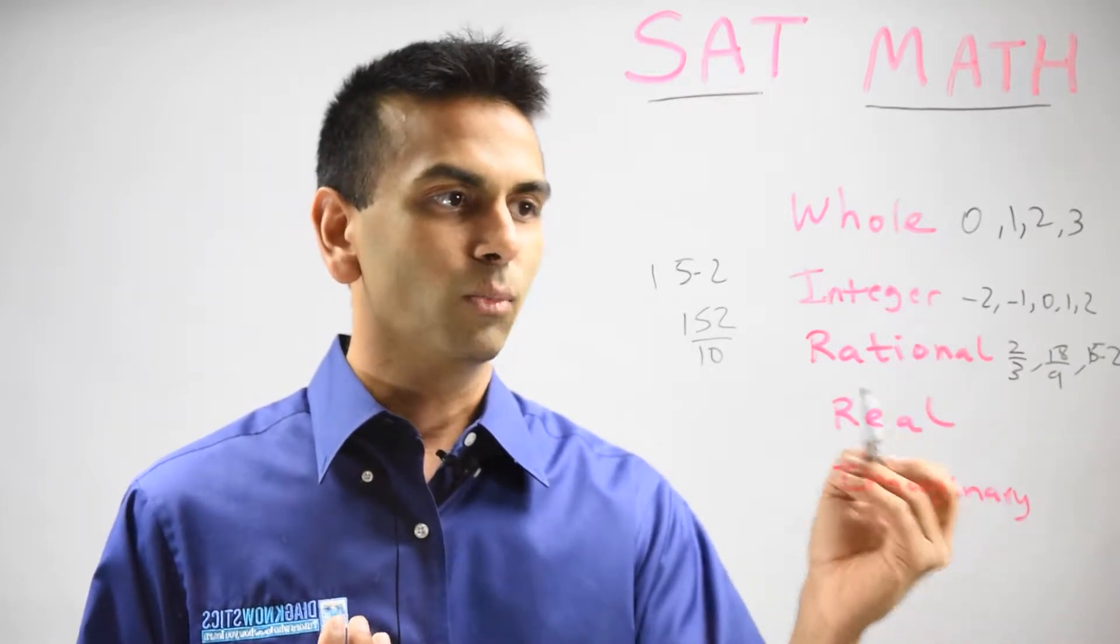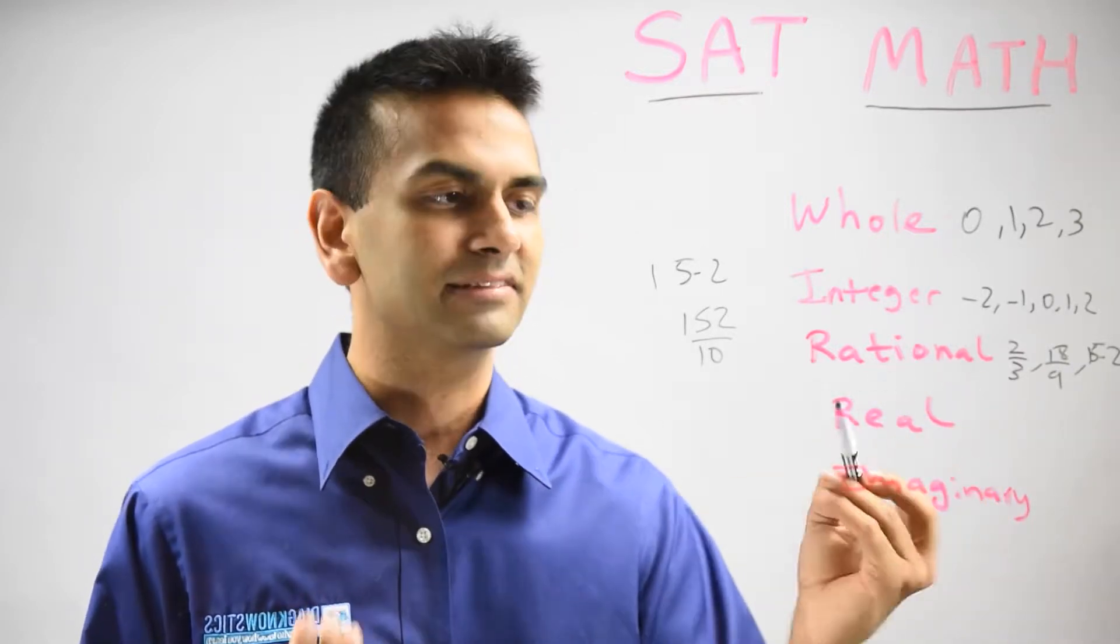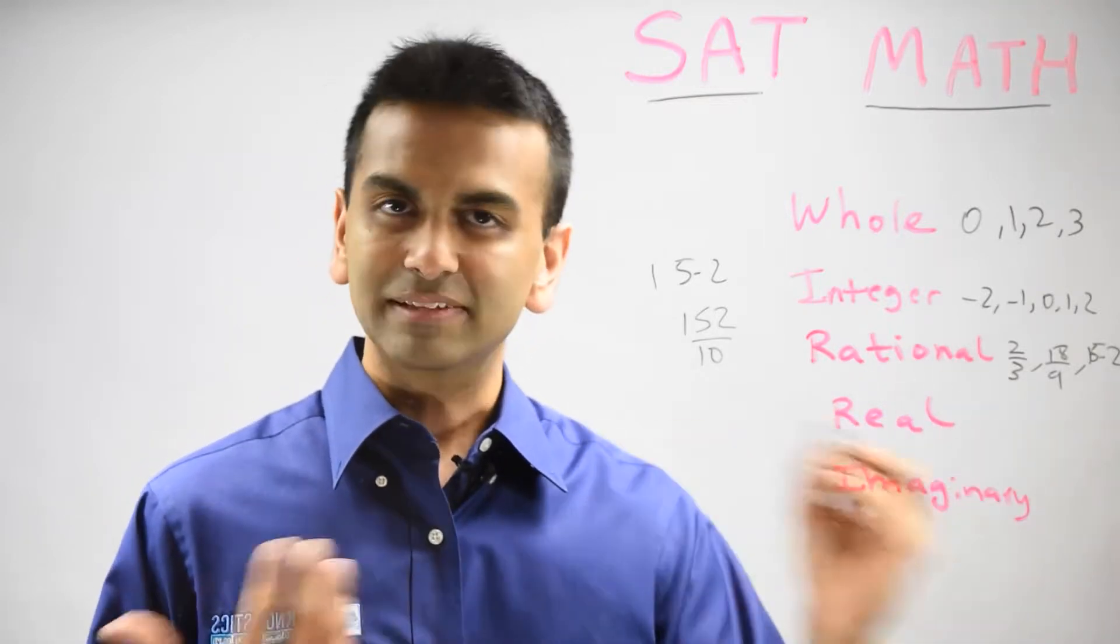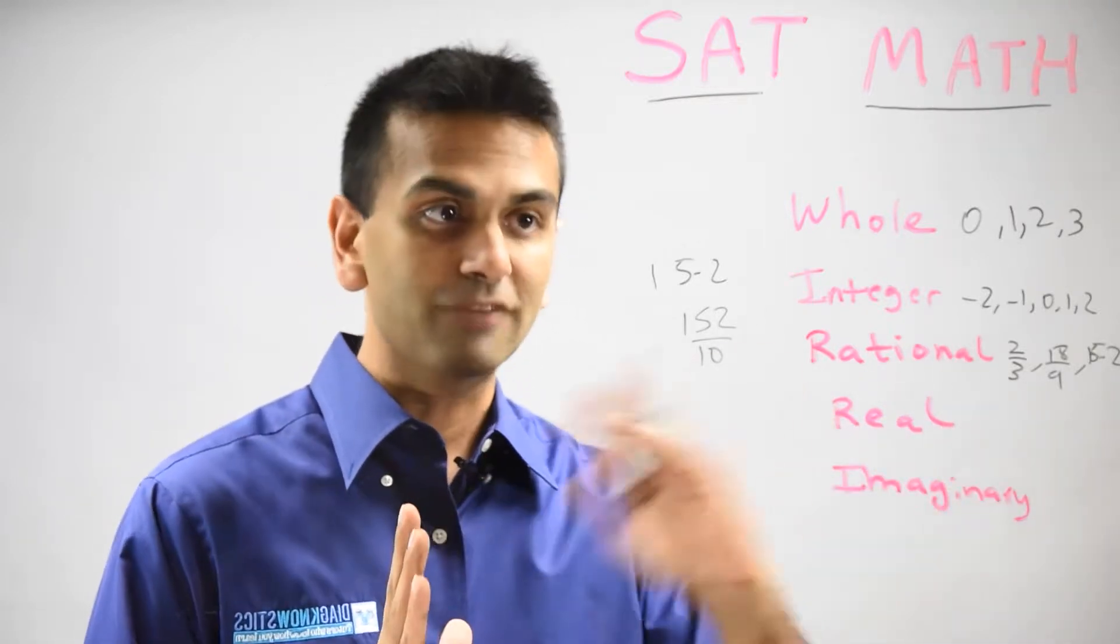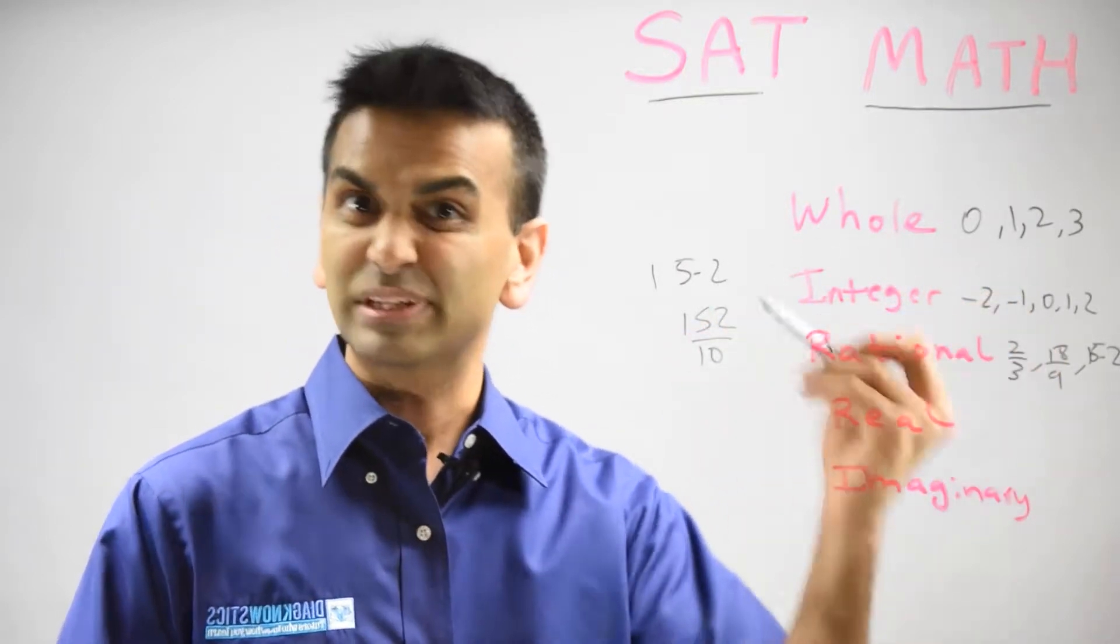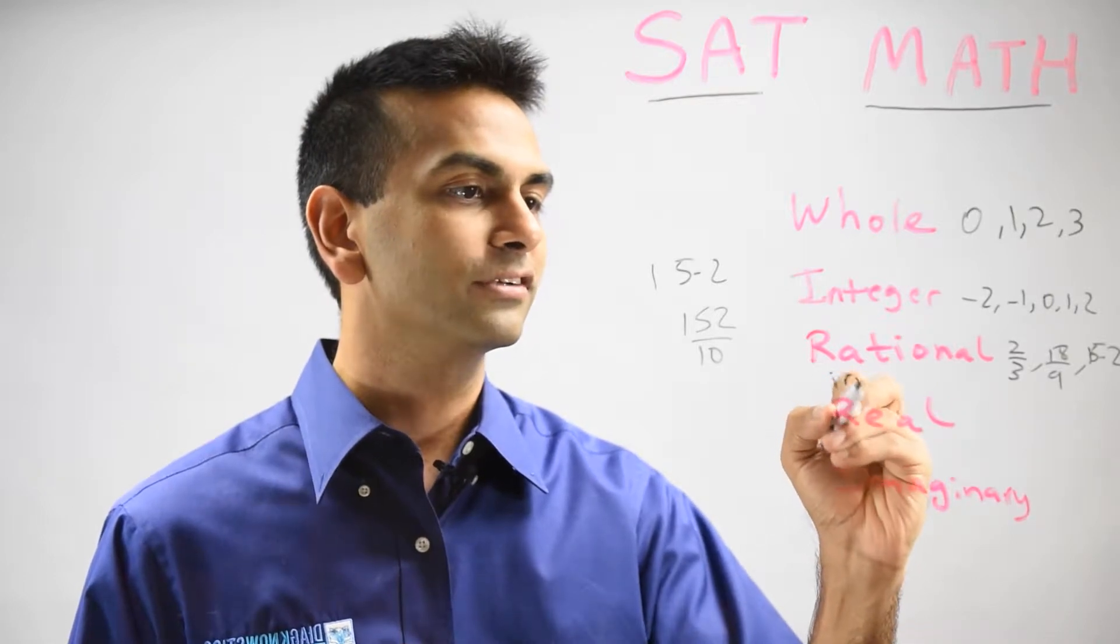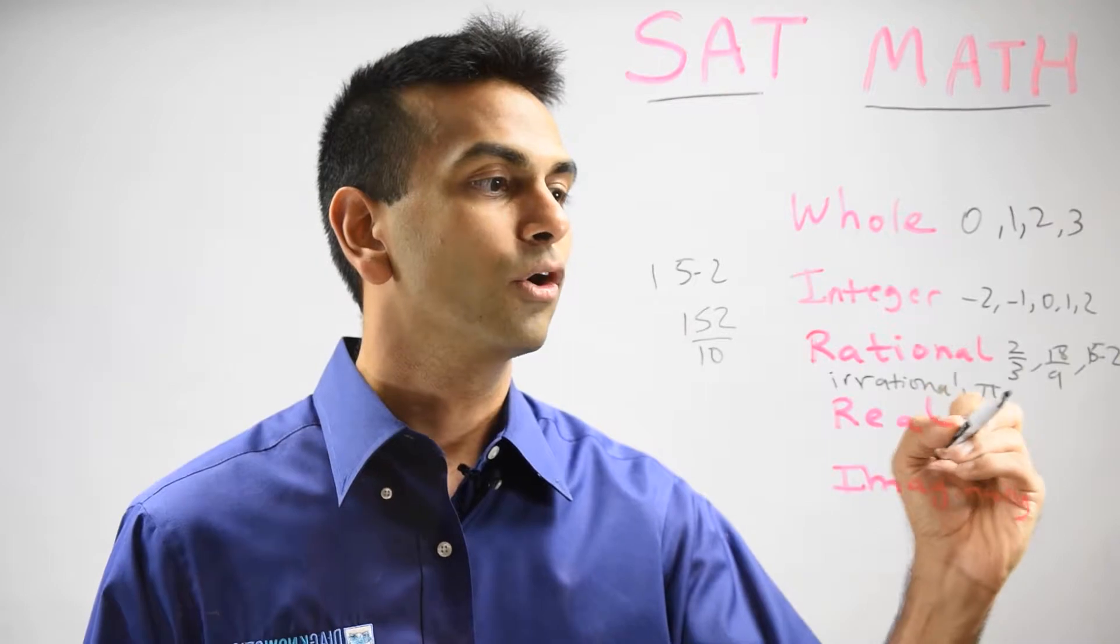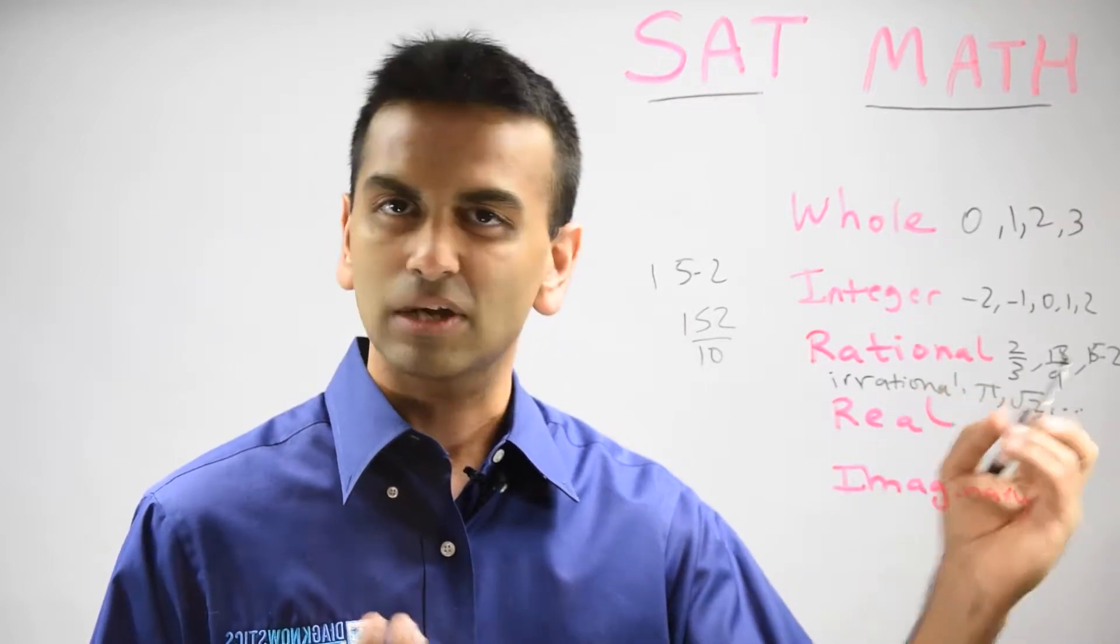So now you might be wondering, well then what's irrational? Irrational is anything that can't be written as a fraction. Irrational numbers usually go on forever because if it went on forever and never stopped, then you can't really write it as a fraction. So irrationals will be numbers like pi or like root 2, numbers that go on forever.